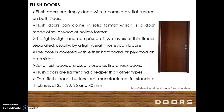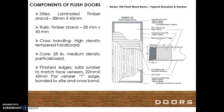Flush doors are lighter and cheaper than other types. The flush door shutters are manufactured in standard thicknesses of 25, 30, 35, and 40 mm. Components of flush doors: Stiles — laminated timber strands 38 mm by 43 mm. Rails — timber strand 38 mm by 43 mm. Cross banding — high density tempered hardboard. Core — 20TLB medium density particle board. Finished edges — solid lumber to match face veneers 22 mm by 45 mm. Power veneer TH bonded to style and cross band.